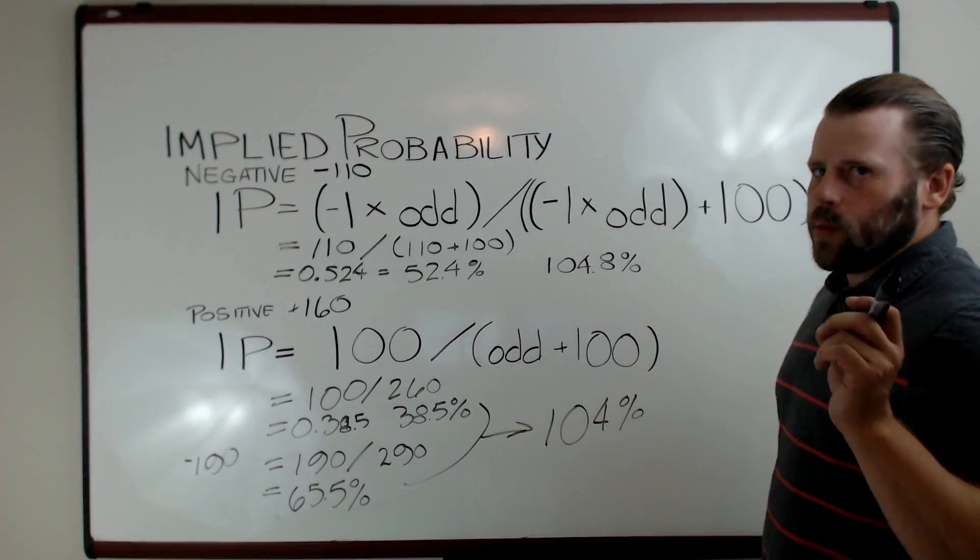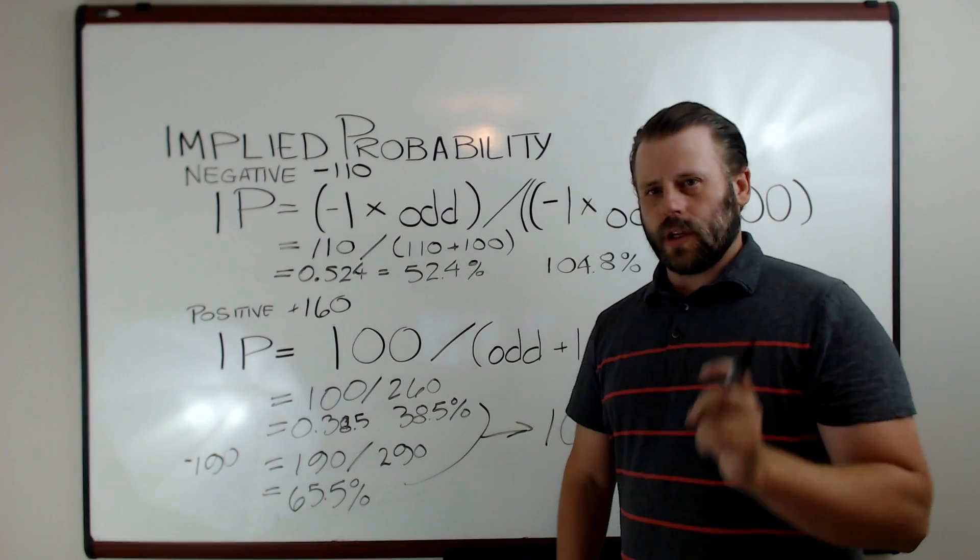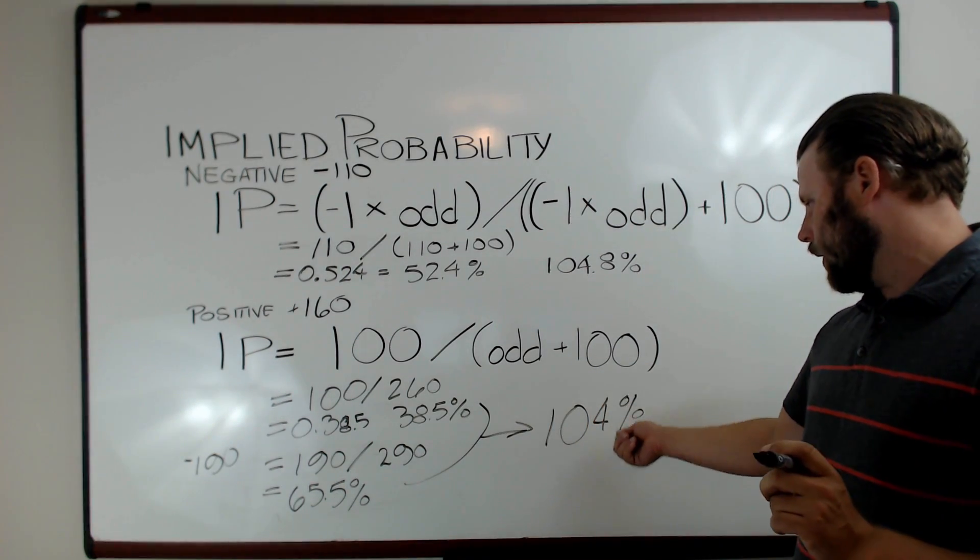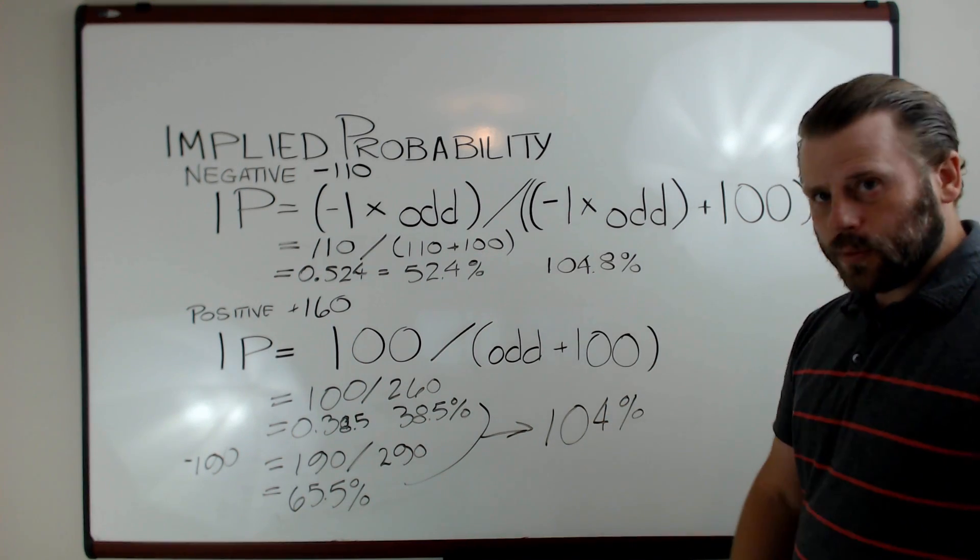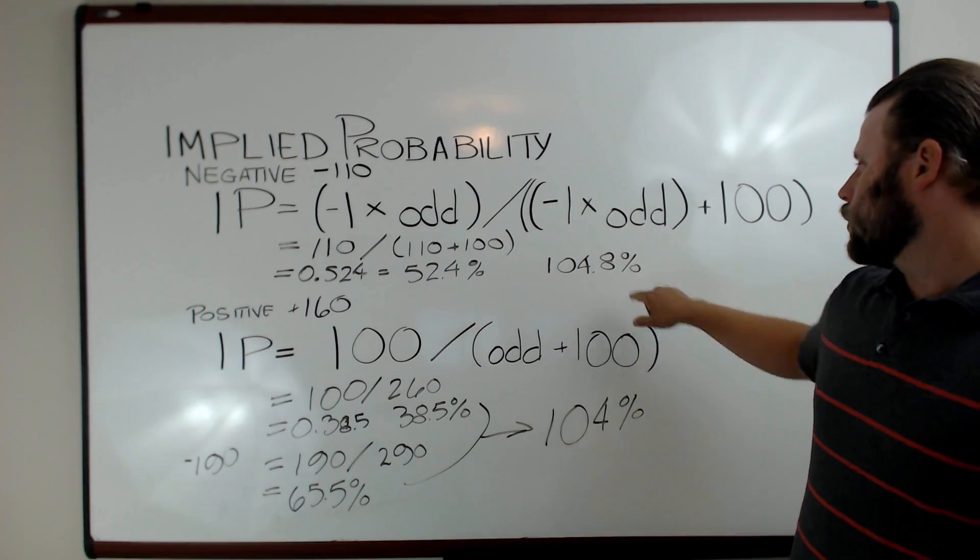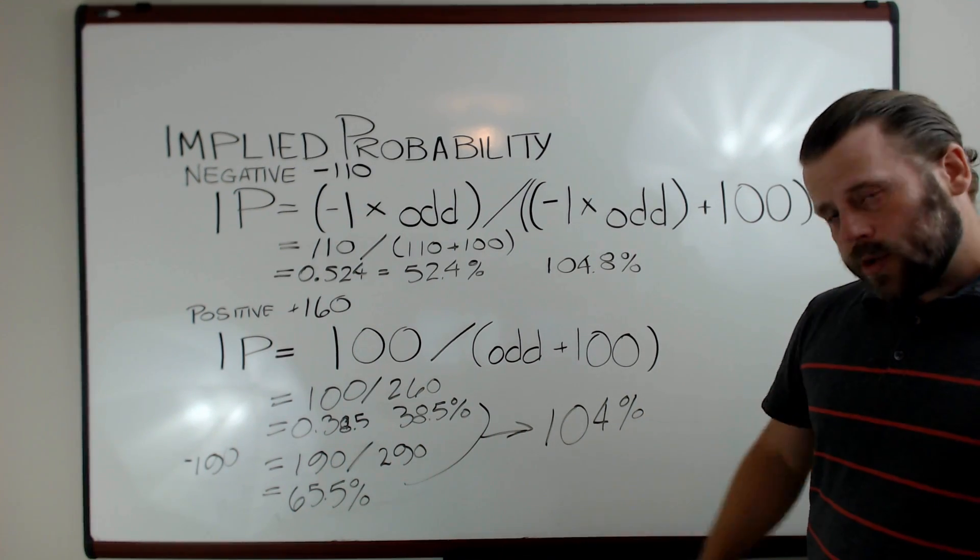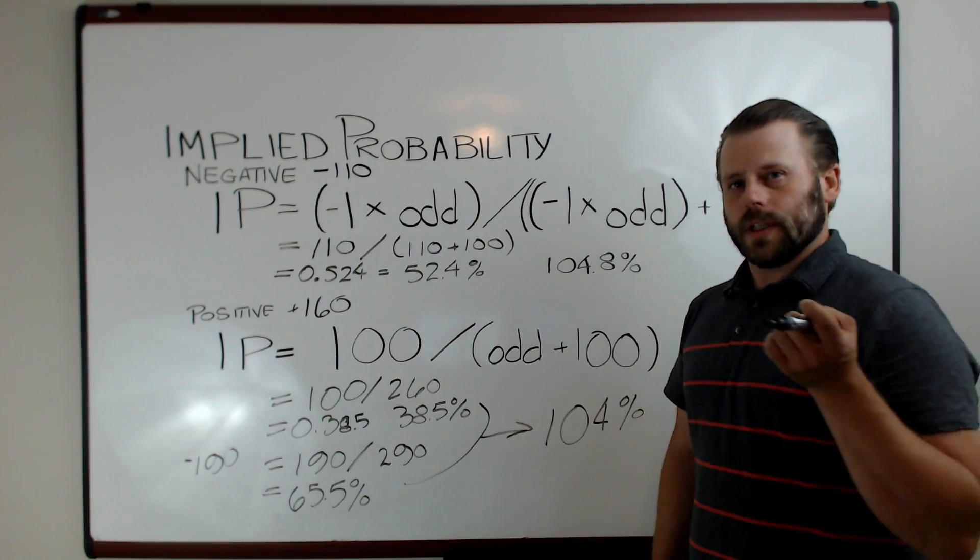The important thing to take away from this particular topic is that 104 percent and 104.8 percent means that in this particular bet, the sportsbook has less of an advantage over you.